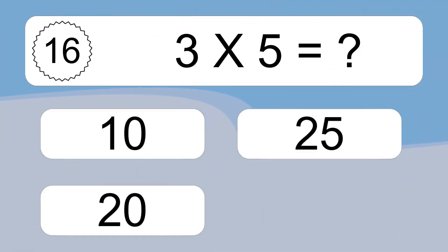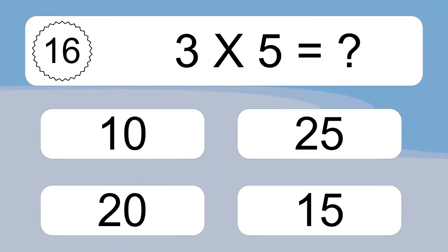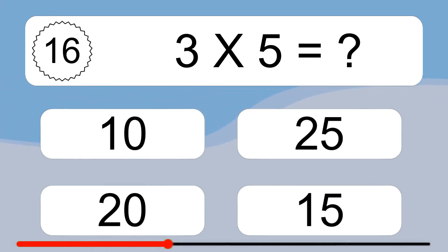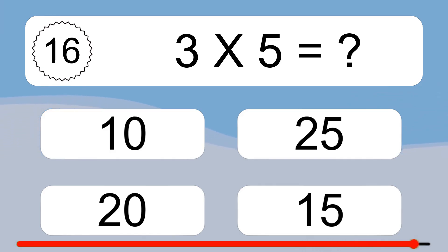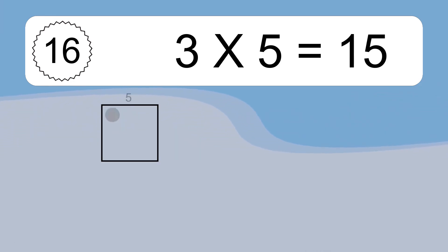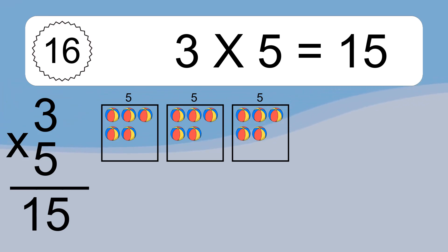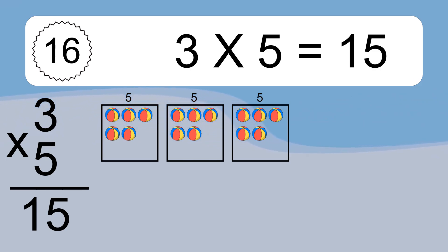3 times 5 equals what? 3 times 5 equals 15. We have 3 boxes, and each box has 5 colorful balls inside. If you count all the balls in all the boxes together, you will have 3 times 5 balls. This equals 15 balls.